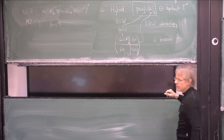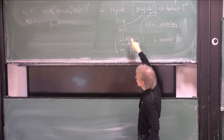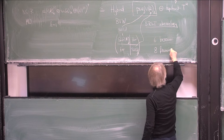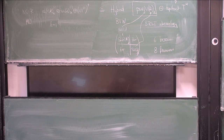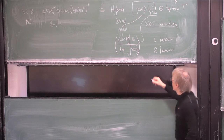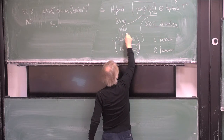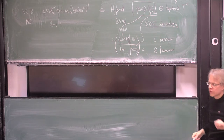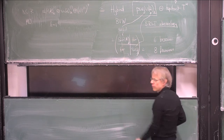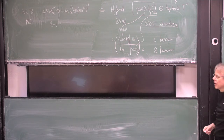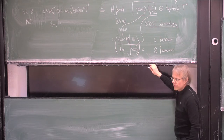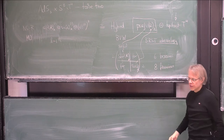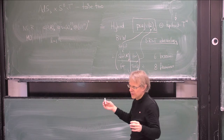PSU(1,1|2) has six bosonic degrees of freedom — six bosonic generators: three from SL2R and three from SU2 — and the fermions sit in bispinors, so there are four entries from each block, giving altogether eight fermions. The eight fermions sit in bispinner representation with respect to SL2R cross SU2. Why four and four? Because this is a two-by-two block and this is a two-by-two block — so four plus four is eight. There are eight fermionic generators and six bosonic generators.